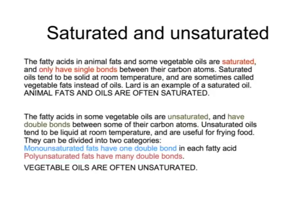These unsaturated oils or fats tend to be better for us. Some of them are called monounsaturated, which means that they've only got one double bond in them. Others are called polyunsaturated, which means they've got more than one — or many — double bonds in them. These vegetable oils are often unsaturated, which means they will have double bonds in their structure.